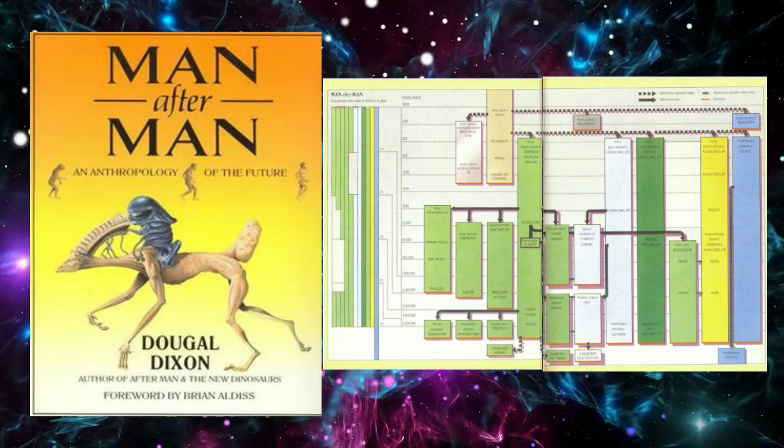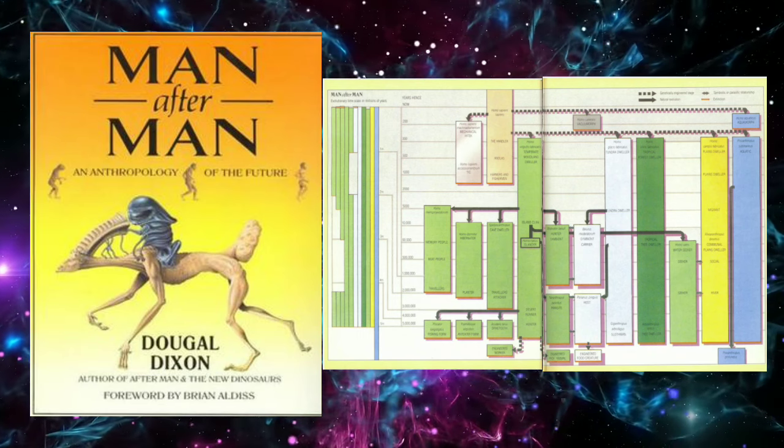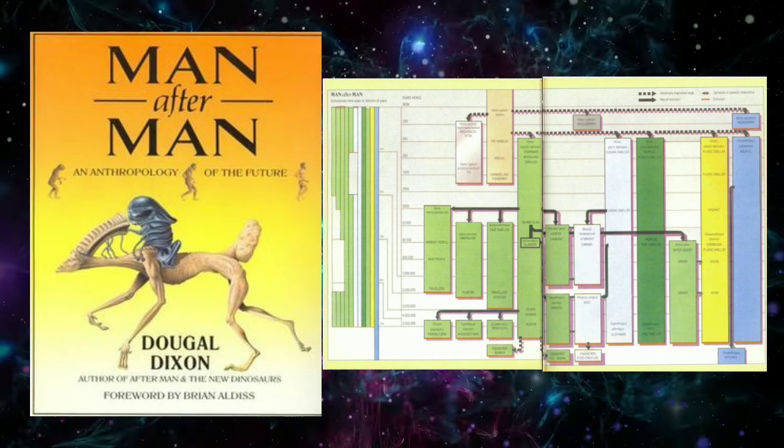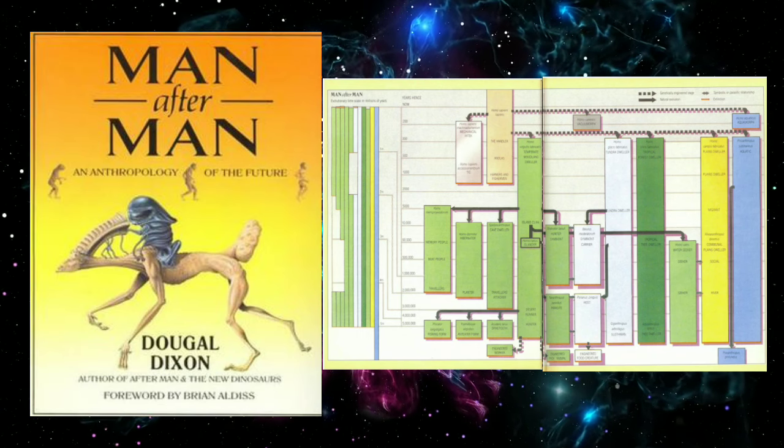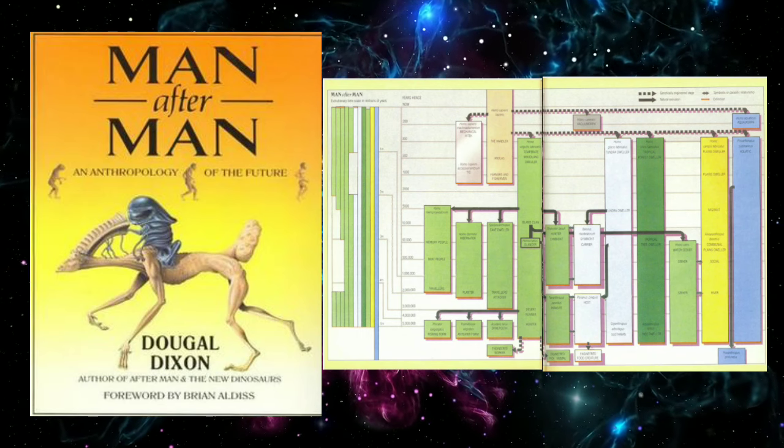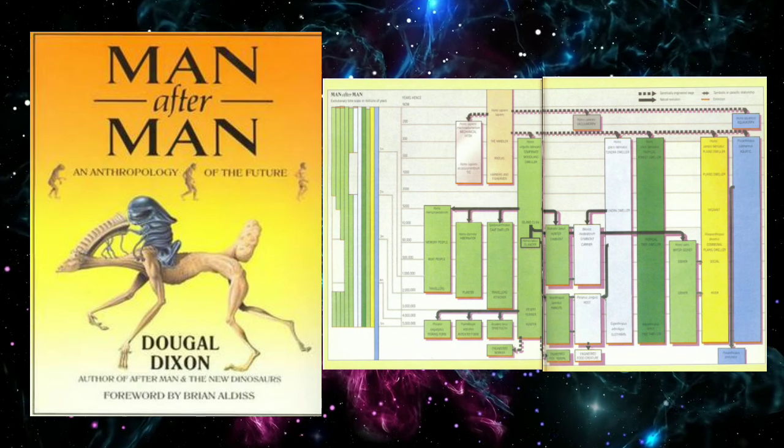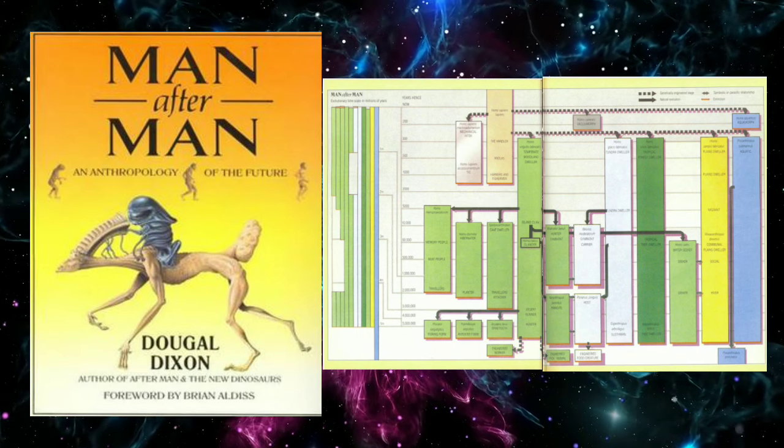It will not be long now before the settlers, with their more stable lifestyle and the time to apply their minds to abstract problems, learn to smelt and use metals, first bronze and then iron, and this knowledge will spread throughout most of the populated world.